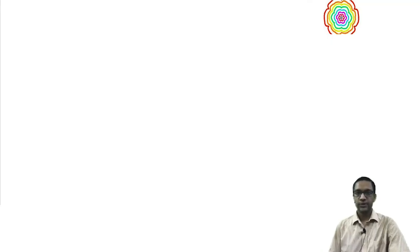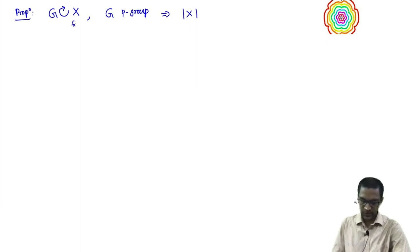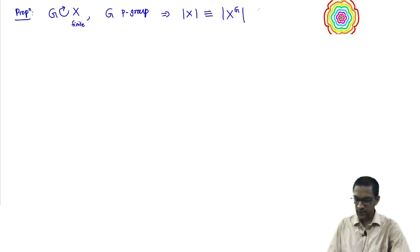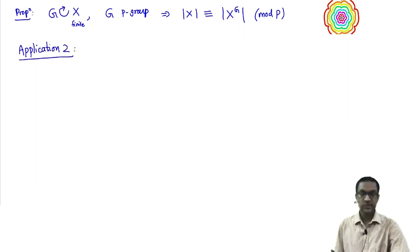Now we will do a second application of the principle that we talked about earlier, the fixed point principle. Let me recall the fixed point principle: G is a finite group acting on a finite set X, and G is a p-group. Then the cardinality of X and the cardinality of the set of fixed points are congruent to each other modulo p. This was the principle, and we had one nice application last time which was the proof of Fermat's Little Theorem.